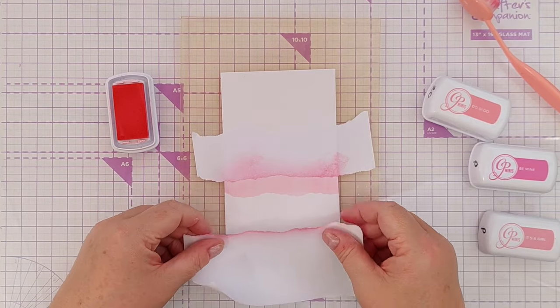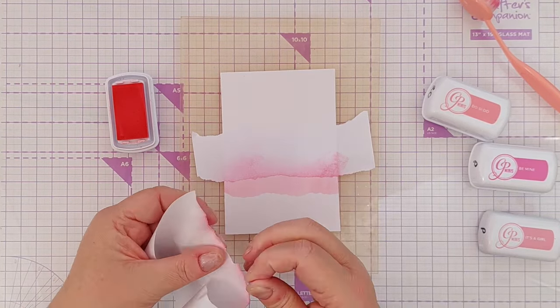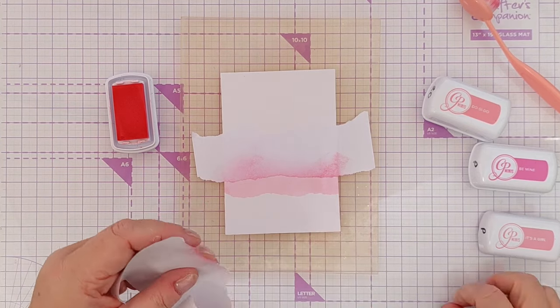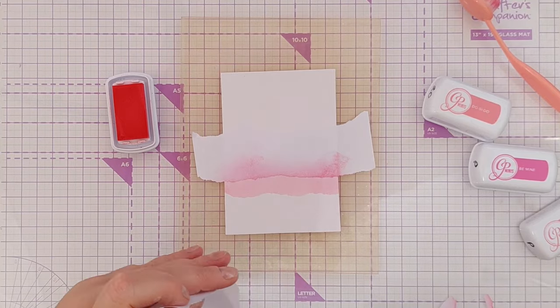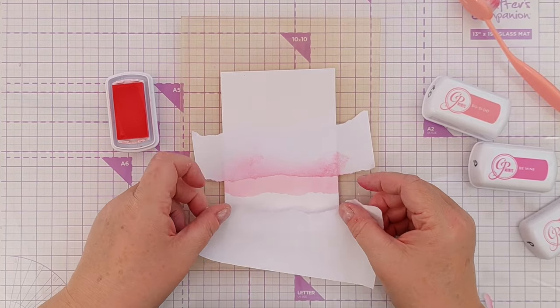Once I'd laid down that first color, I lifted up my masking paper and tore a fresh edge, which I then laid down beneath the colored strip.